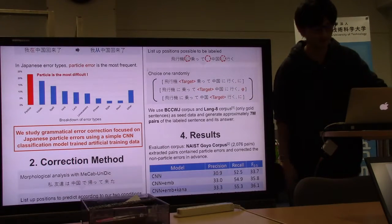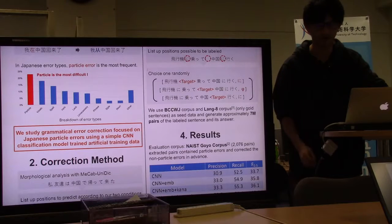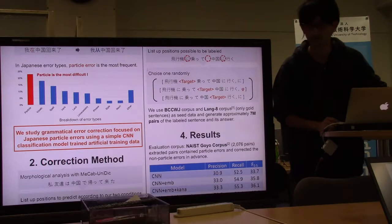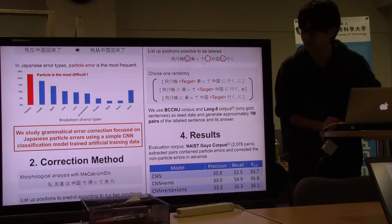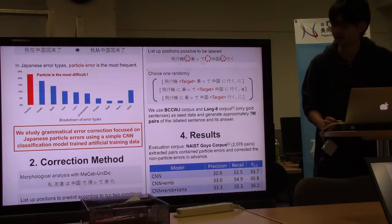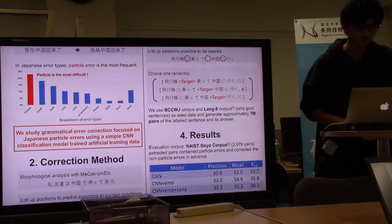This graph is a breakdown of error types in Japanese learners' corpus. It shows particle is the most difficult for Japanese learners.